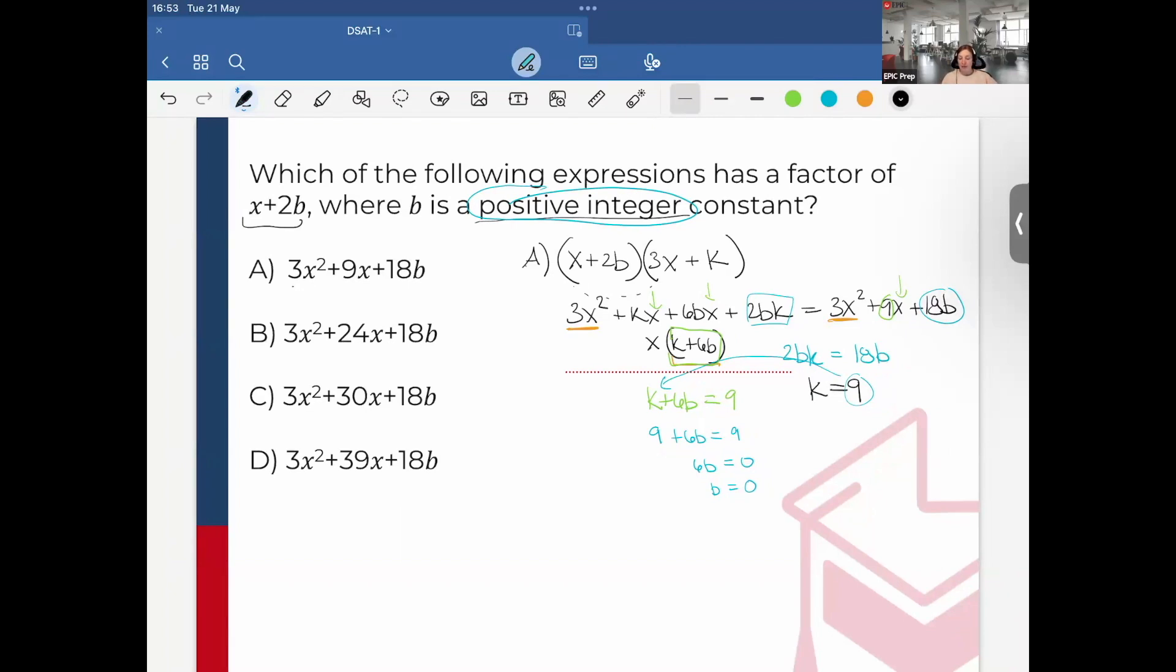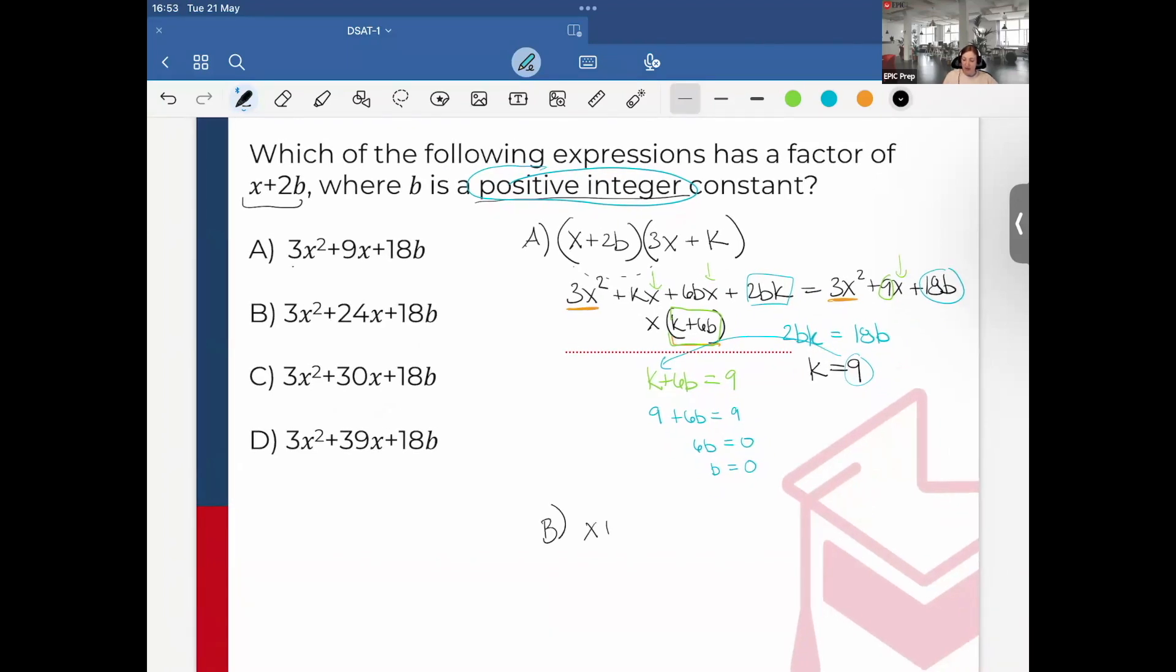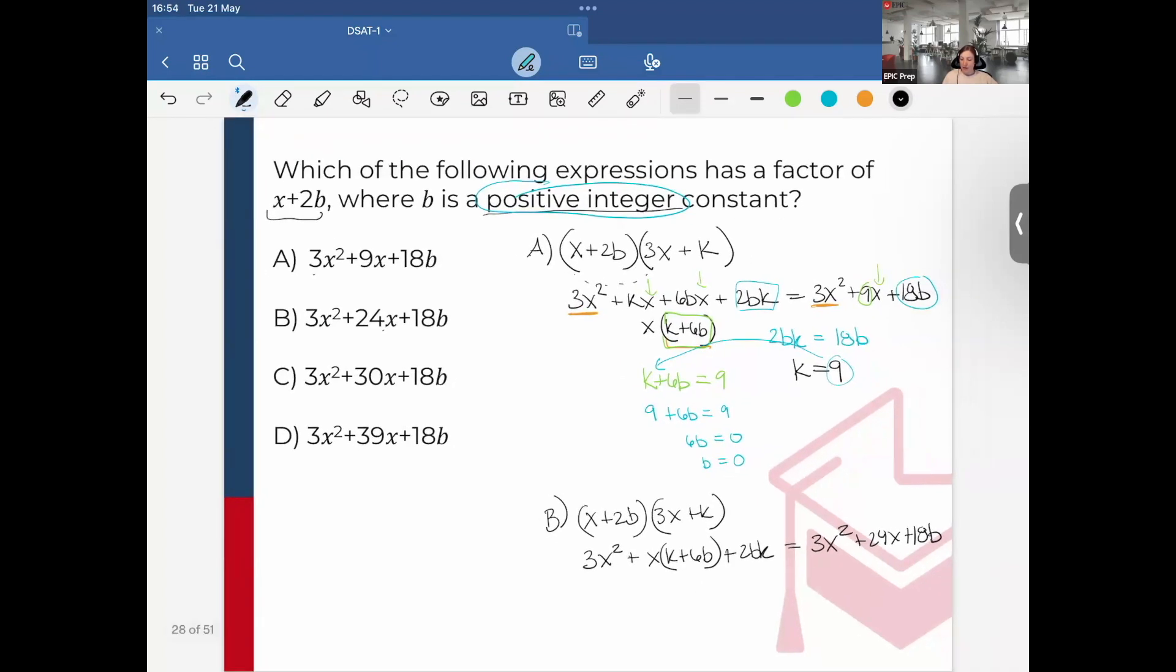I should go through and check all the answer choices. However, there's a shortcut because I can see each of them is going to be x + 2b times 3x + k. This expands to the same expression above: 3x² + (k + 6b)x + 2bk. And 2bk = 18b will be true in all the answer choices I'm testing.